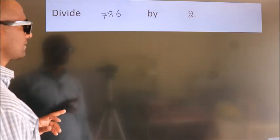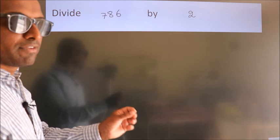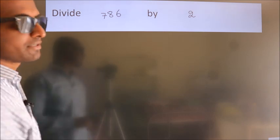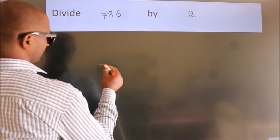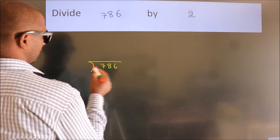Divide 786 by 2. To do this division, we should frame it in this way. 786 here, 2 here.